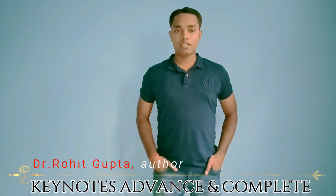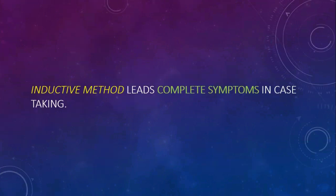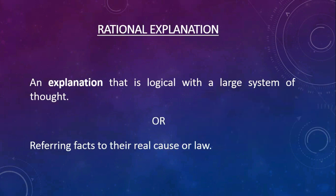Rational explanation and correct interpretation are two sides of the same point. In this part of the series, physicians must know about the facts of rational explanation — by referring them to their real cause and the law of inductive method according to Dr. Hahnemann. Rational explanation is an explanation that is logical within a large system of thought, or refers facts to their real cause or law. Classification of rational explanation: 1. Philosophical, 2. Pathological.